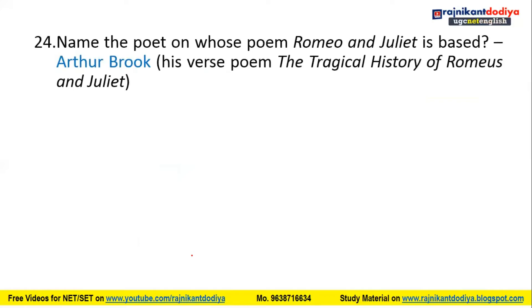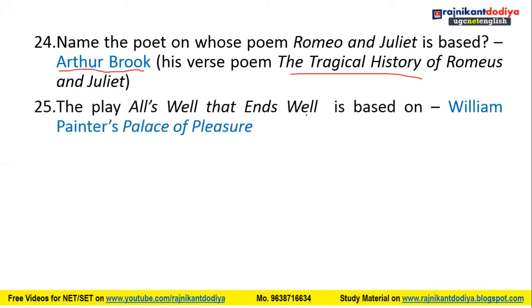Romeo and Juliet is based on the poem by Arthur Brooke. The poem by Brooke is titled The Tragical History of Romeus and Juliet, and it is the source on which Shakespeare's Romeo and Juliet is based.